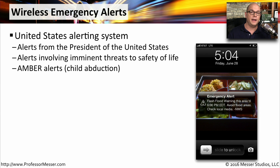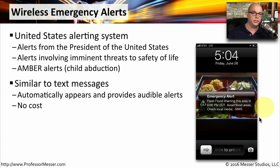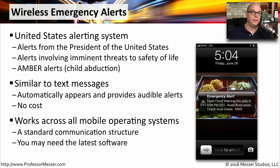In the United States, our mobile devices are configured with a standard method of receiving wireless emergency alerts. These may be alerts that come directly from the President of the United States. They might be alerts that give us information about an imminent threat to the safety of life, or they may be AMBER alerts. These are similar to text messages that pop up on your screen, but there is an audible alert to identify it as a wireless emergency alert. There's also no cost to receive these alert messages. This is a very standard method, so it works across every single one of these mobile operating systems. You may need the latest software to be able to receive these alerts, but once it's in your operating system, you'll receive them automatically.